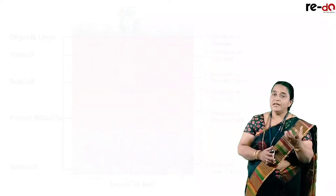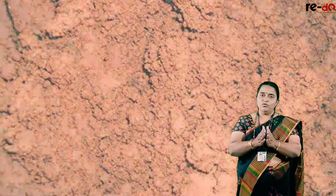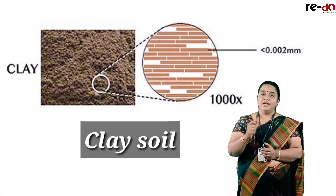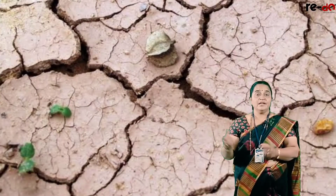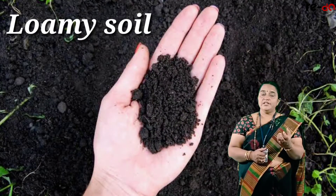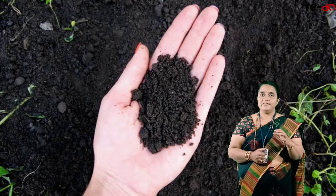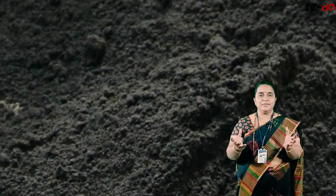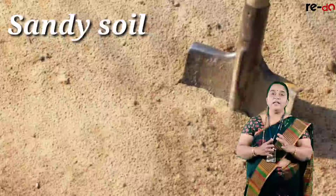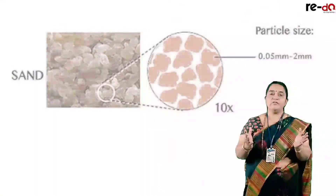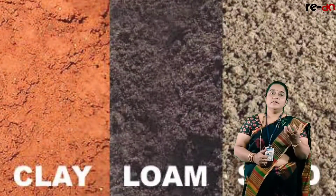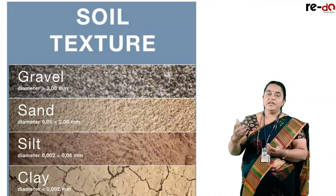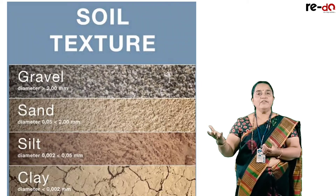The particles of the soil, if they are very close to each other, we call it clay soil. In clay soil, aeration is less but water holding capacity is maximum. Loamy soil has very less aeration and maximum water holding capacity. In sandy soil, aeration is maximum as each particle is separate from each other, and water holding capacity is very less. So depending upon the texture of the soil, we can decide the water holding capacity, and accordingly we can see the distribution of autotrophs growing in that particular area.